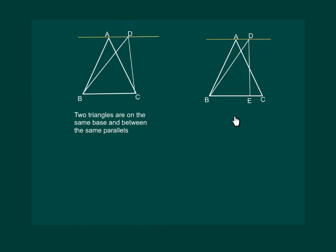Now look at the second figure. In this figure, note that triangle ABC and triangle DBE are not on the common base.